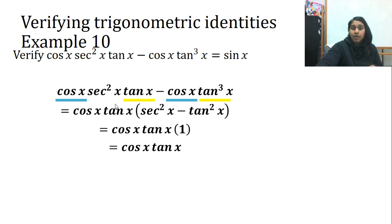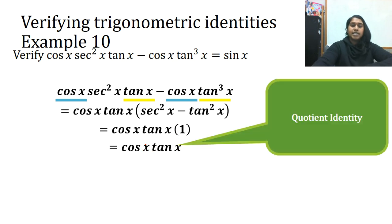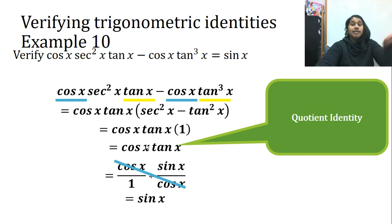And now I end up with cosine x tan x. It's not quite sine x, but I can see why I'd be super close because, isn't that my friend, the quotient identity? So I go ahead and change it. My cosines delete and I'm left with sine. That simple.